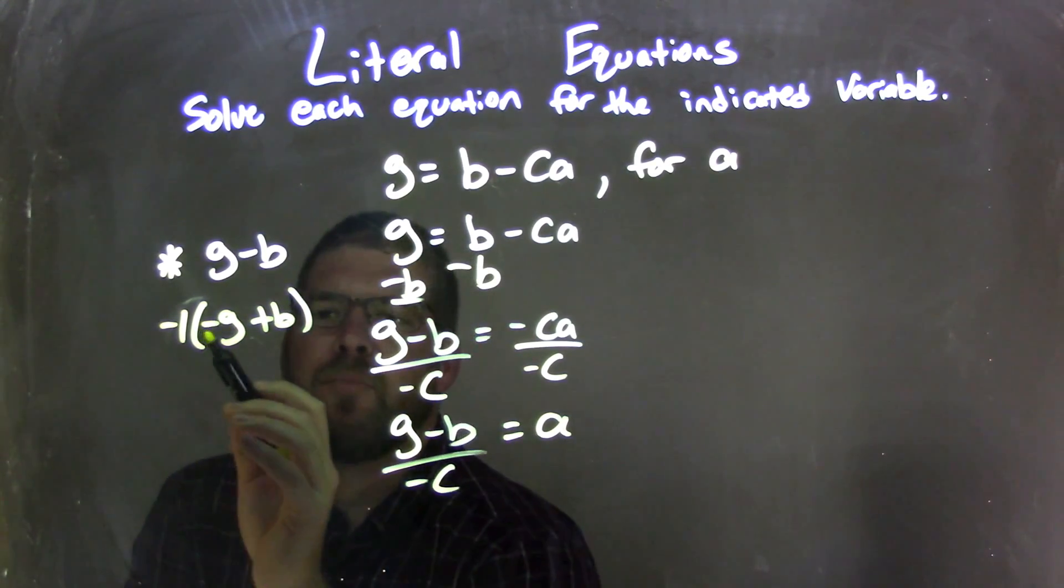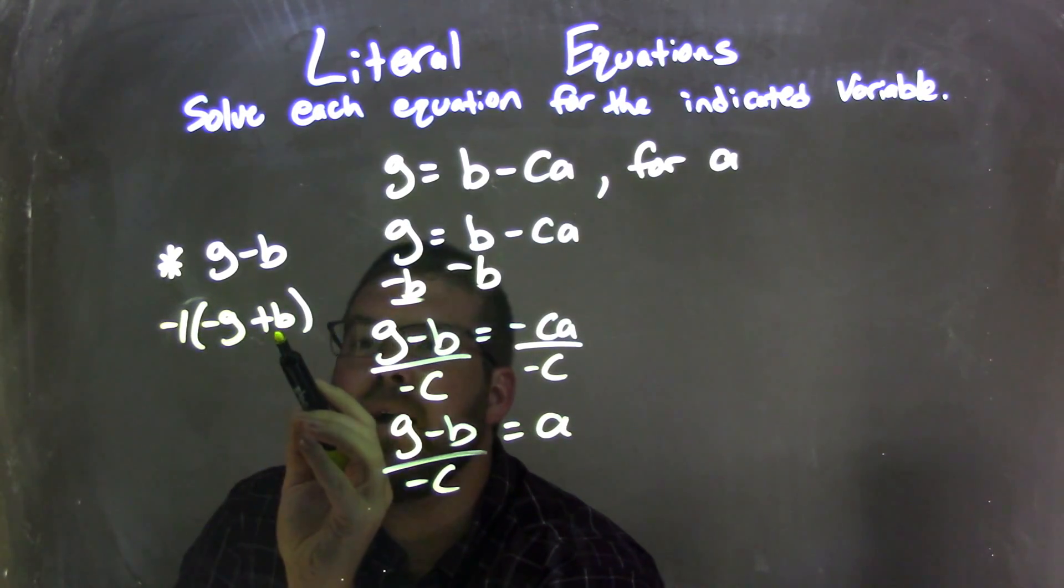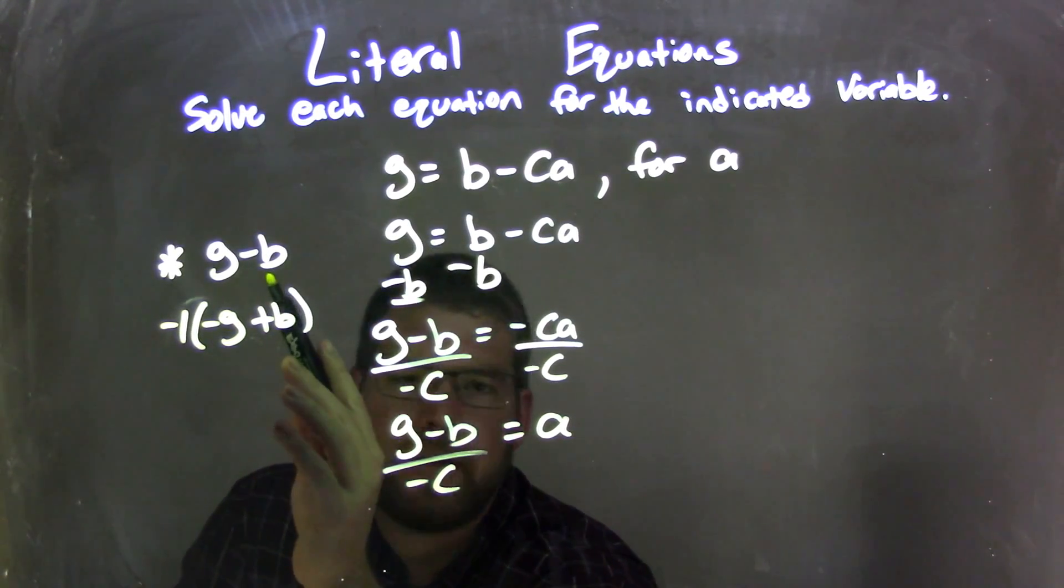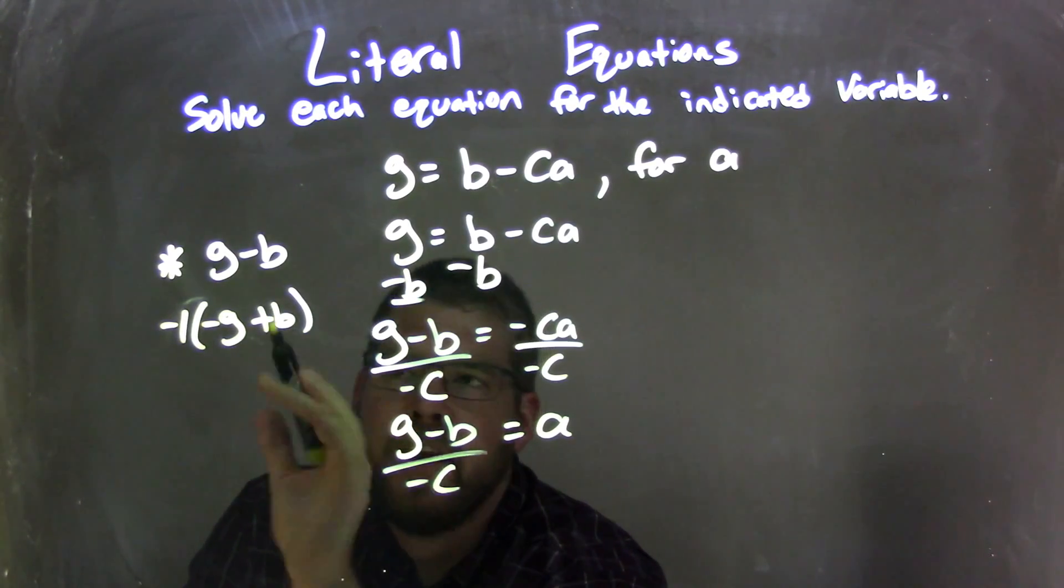And when you think about it, if I distributed the negative back in, negative one times negative G is a positive G, and negative one times B is plus a negative B, which is the same thing as minus B. So I haven't changed the equation or this little part here. I just made it look different.